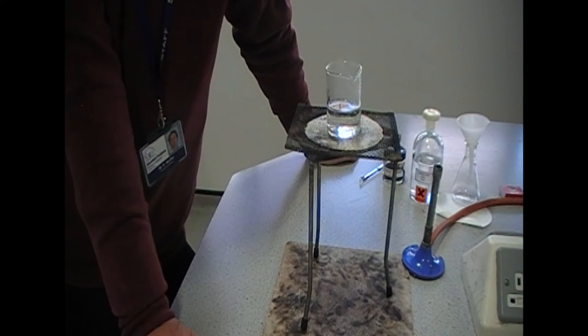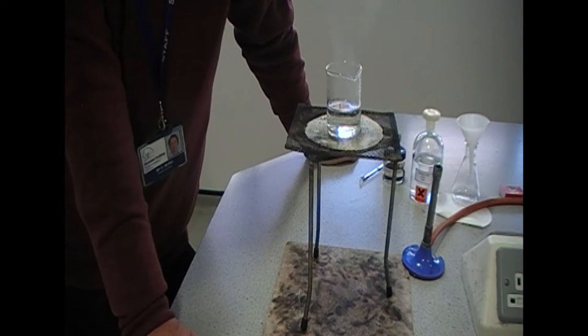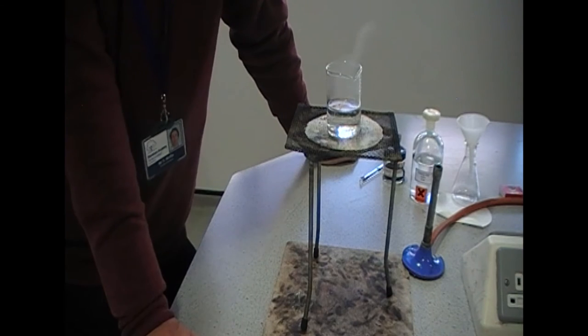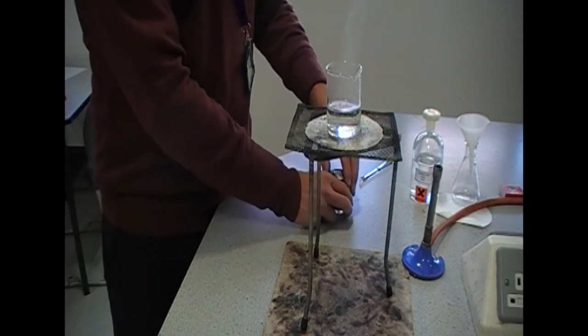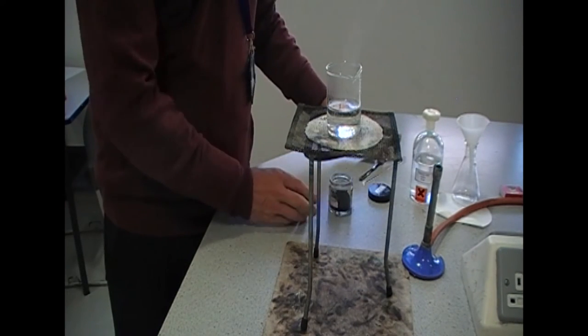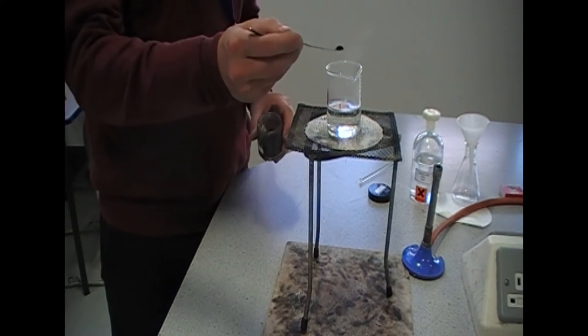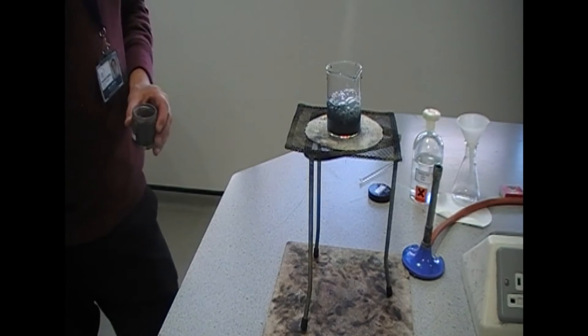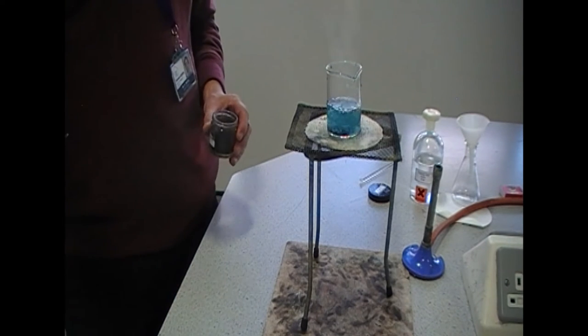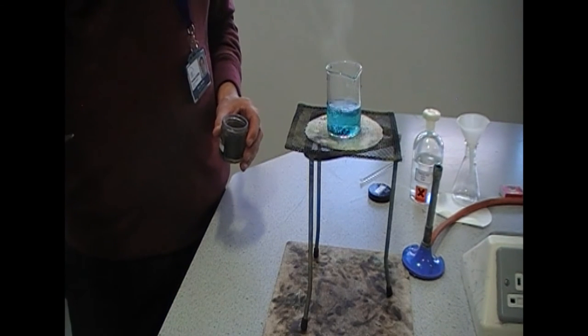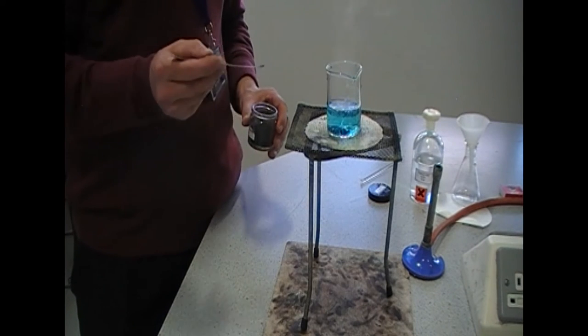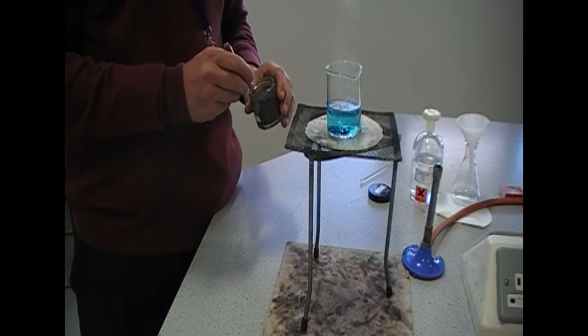Using the spatula, add small amounts of copper oxide at a time, stirring with the glass rod. So, copper oxide, spatula, small amounts. You can see it turns a blue colour almost straight away.